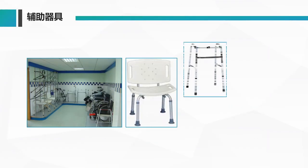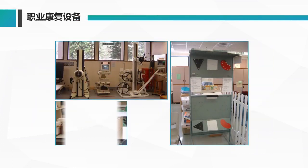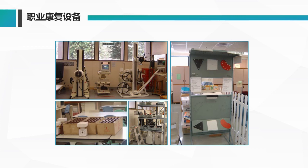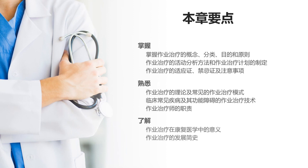辅助器材主要对截肢的康复有很大作用，像腋杖、手杖、轮椅。还有比较专业的职业康复设备，根据特定的作业活动配备特定的康复设备。整个一章的重点内容，主要是：掌握作业治疗的概念、分类、目的和原则；掌握作业治疗的活动分析方法和计划制定；掌握作业治疗的适应症、禁忌症和注意事项。